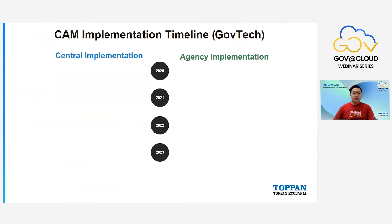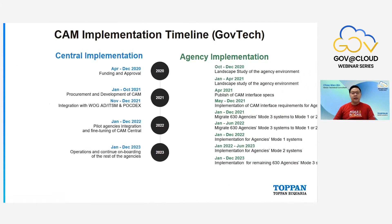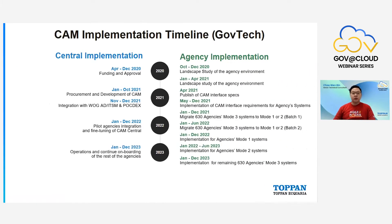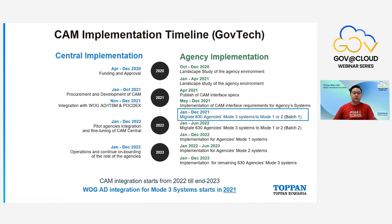Here is the CAM implementation timeline shared by GovTech. There are two parts: the central side of implementation and the agency side. CAM integration is going to start as soon as 2022, which is only five to six weeks away. This means if you still have a Mode 3 system, you should already be working on WOG AD integration this year. If you're concerned about the timeline and need immediate attention, drop a comment in the chat.